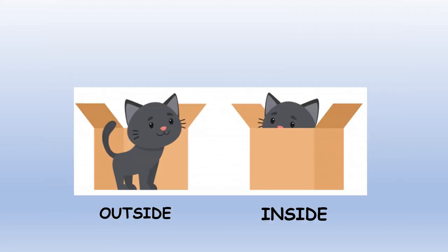Kids, here you can see two cartons. Here the cat is outside the carton. And here the cat is inside the carton. This cat is outside the carton. And this cat is inside the carton. Outside. Inside.